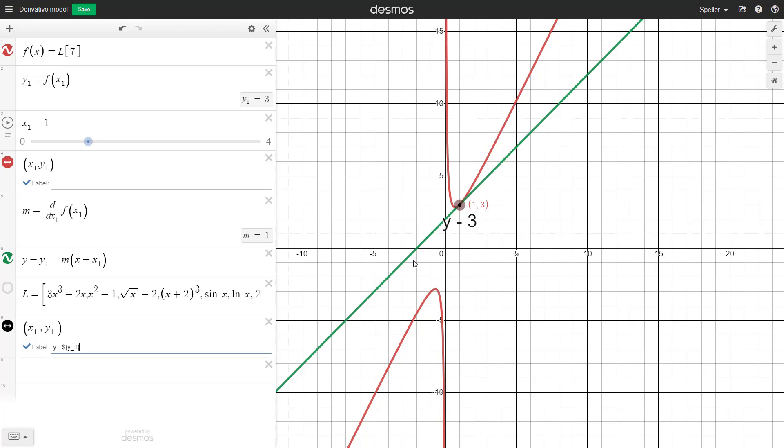Now place the equal sign. I want to show what the value of M is, so I'll place dollar sign, curly brace, M, then right curly brace. M represents the slope, and here we see 1 is showing.